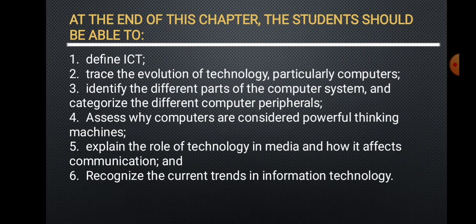At the end of this chapter, a student shall be able to: 1. define ICT; 2. trace the evolution of technology, particularly computers; 3. identify the different parts of the computer system and categorize the different computer peripherals; 4. assess why computers are considered powerful thinking machines; 5. explain the role of technology in media and how it affects communication; and 6. recognize the current trends in information technology.